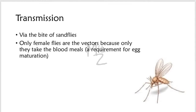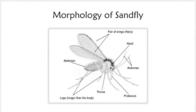Transmission. Transmission of Leishmaniasis occurs via the bite of sandflies. Only female flies are the vectors because only they take blood meals, a requirement for egg maturation. Here you can see the female sandfly — it has a pair of wings, a head, antenna, proboscis, thorax, legs that are longer than the body, and abdomen. It uses its proboscis to suck blood from the infected host.